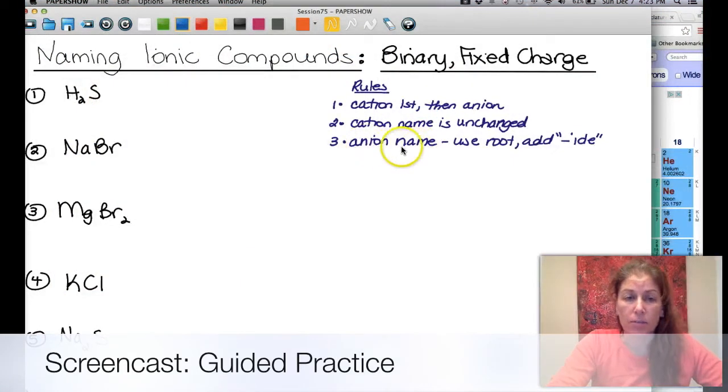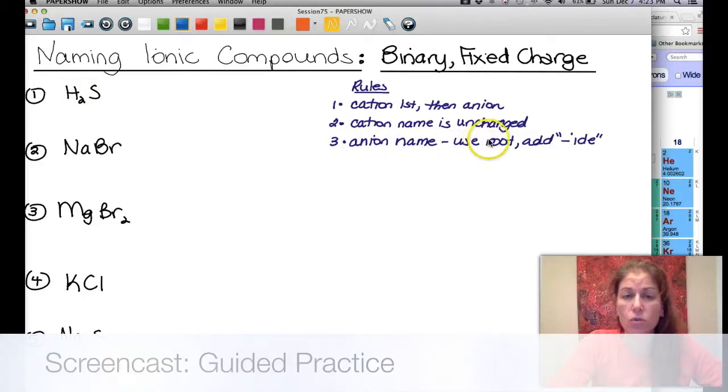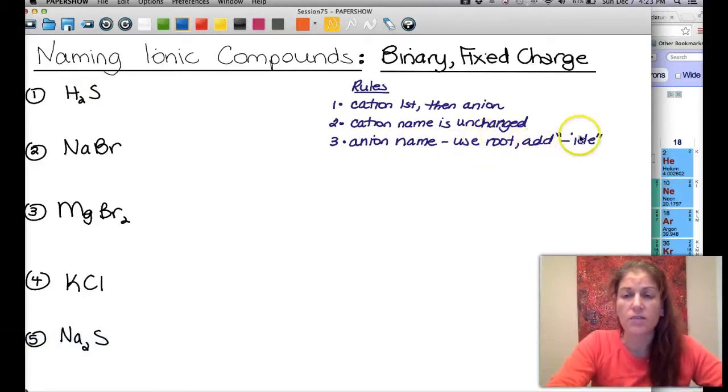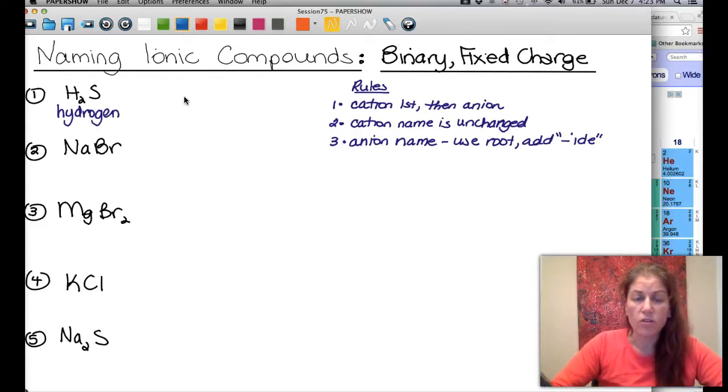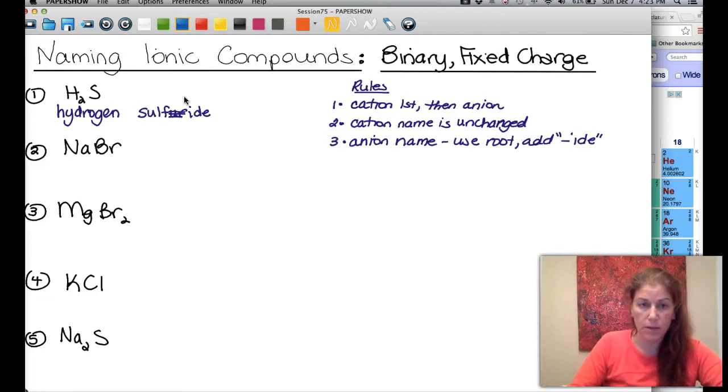The anion name, though, has to change. You use the root of it, and then you just add the suffix IDE. So let's do some examples. Hydrogen is the cation that doesn't change. And the sulfur, we just take sulfur, we eliminate the end, and we add IDE. So it's hydrogen sulfide. That's the name of this compound.